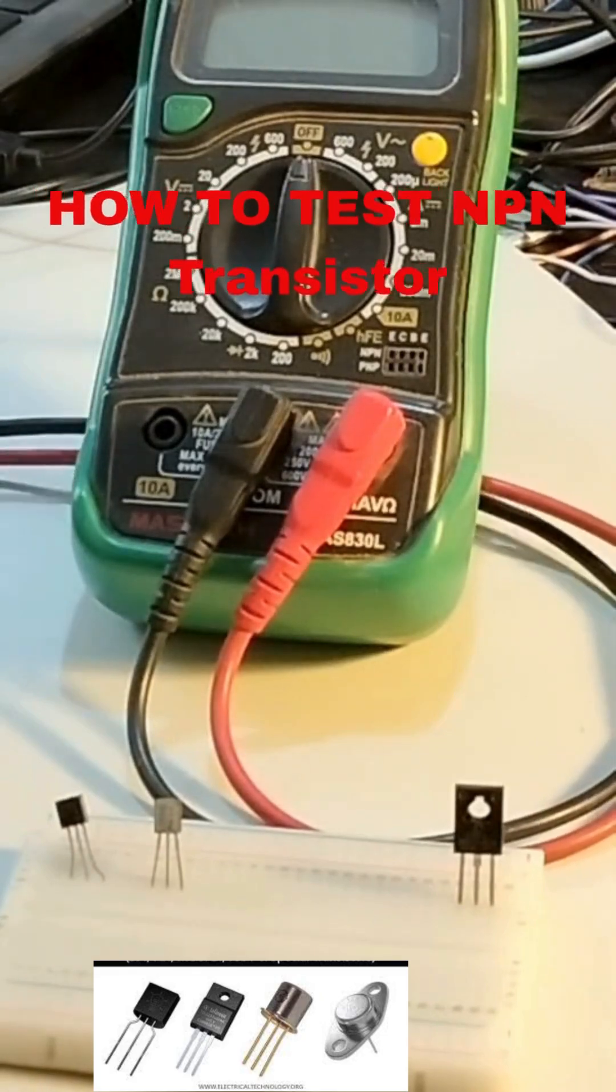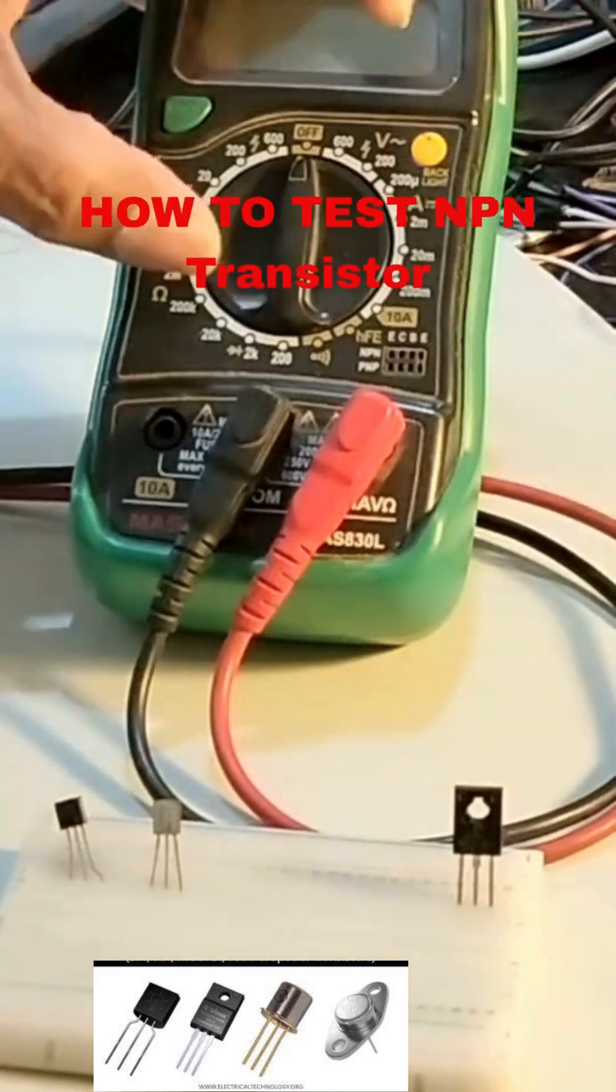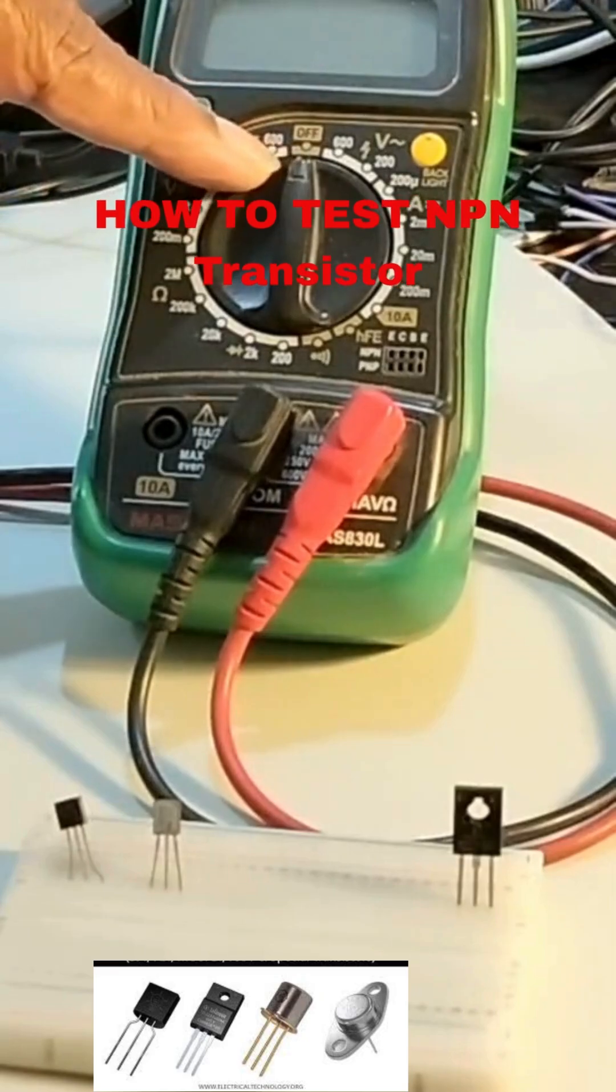How to test a transistor with the digital multimeter. Put this switch, now it is in mass condition, put it on.